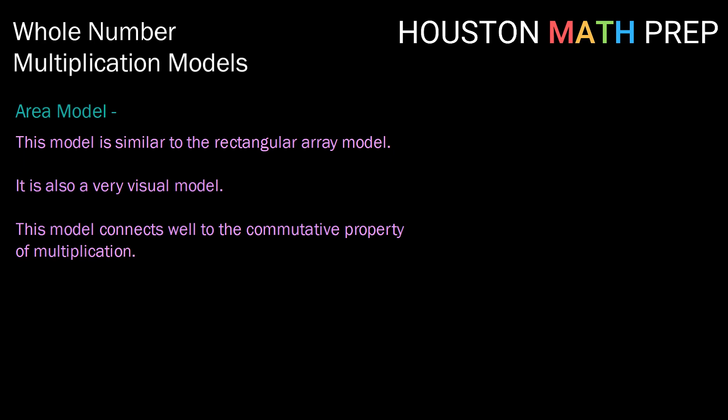This is very similar to another model, which is called the area model. As I said, this model is similar to the rectangular array model. It's also a very visual model. And this model connects very well to the commutative property of multiplication, so it can be leaned upon when we start to teach students about commutativity.